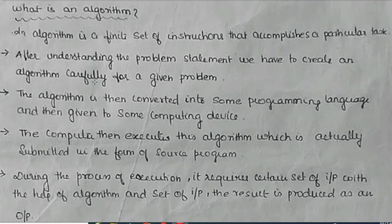We have to create an algorithm carefully for a given problem. The algorithm then will be converted into programming language. You can use any programming language like C, C++, Java and all. Then you give it to some computing device. The computer then executes this algorithm which is actually submitted in a form of a source program. During the process of execution, it requires certain inputs which helps the algorithm to get a result as an output.